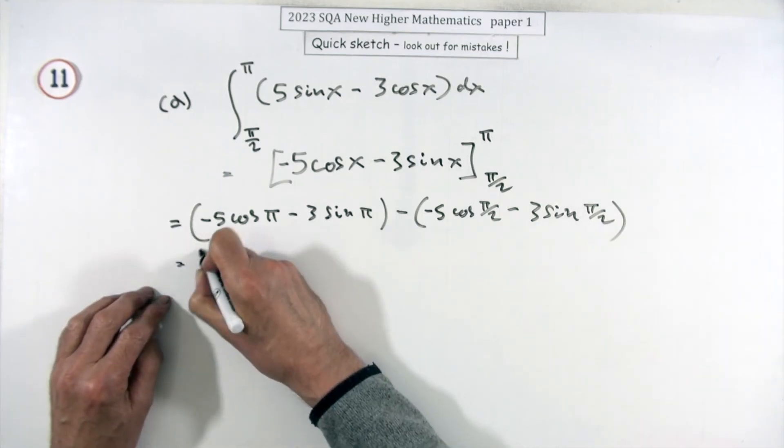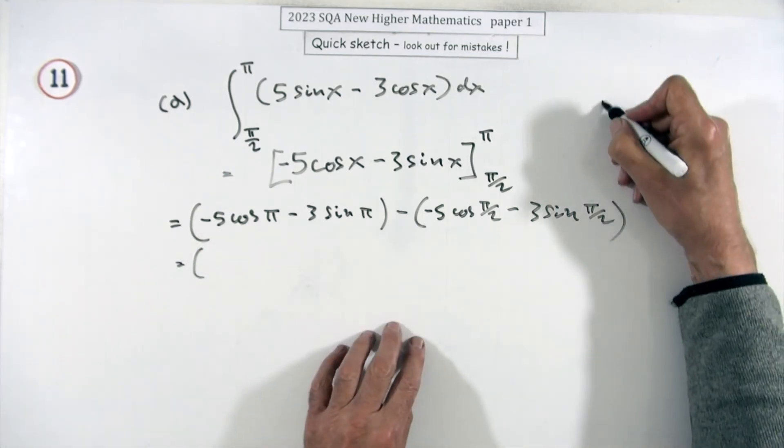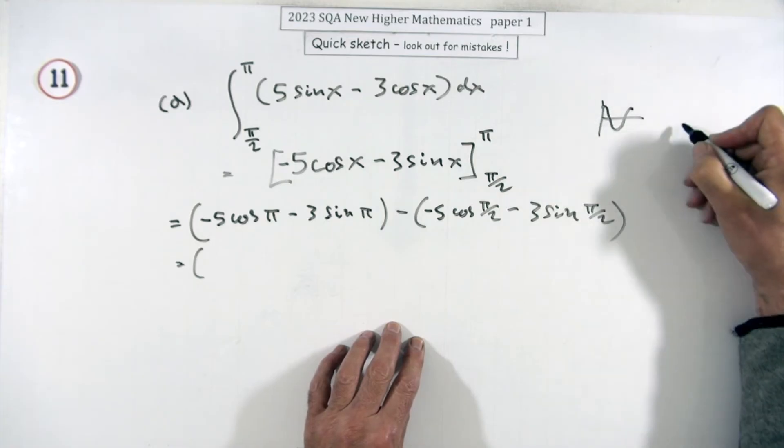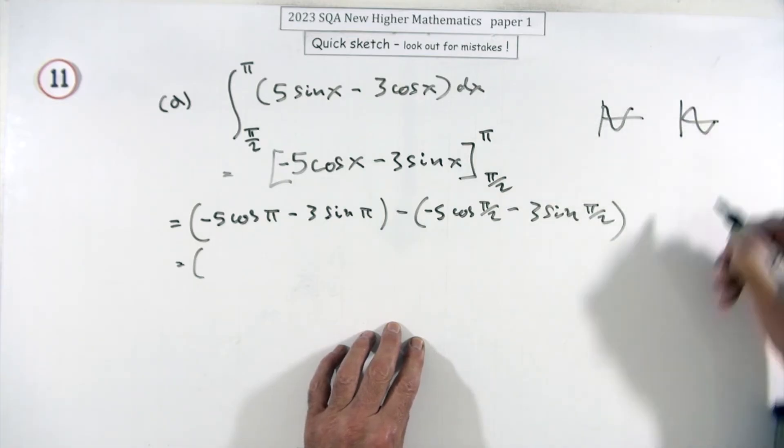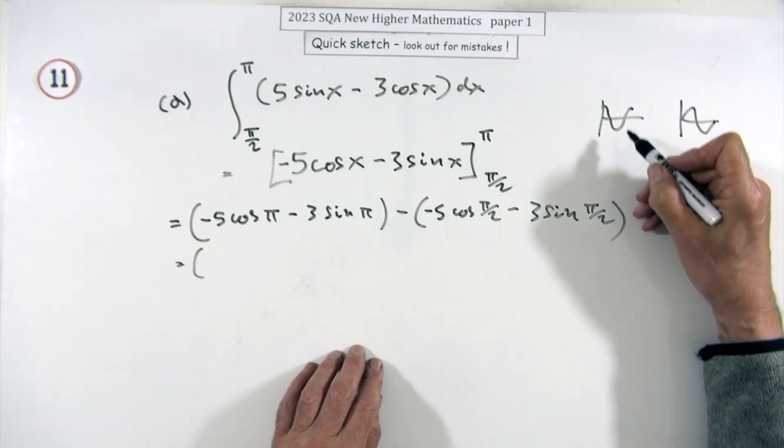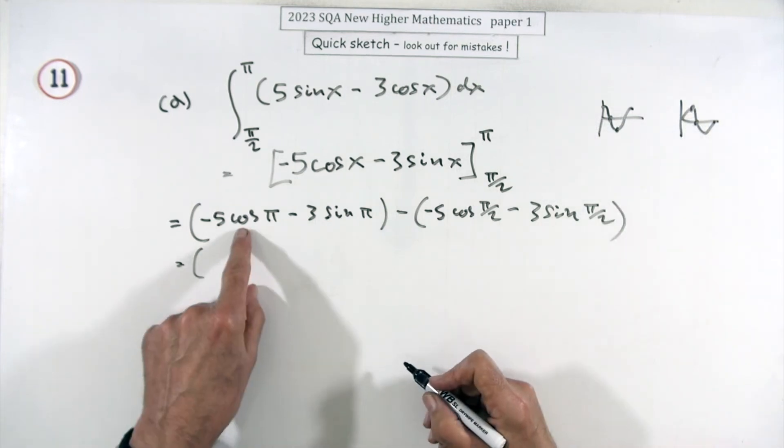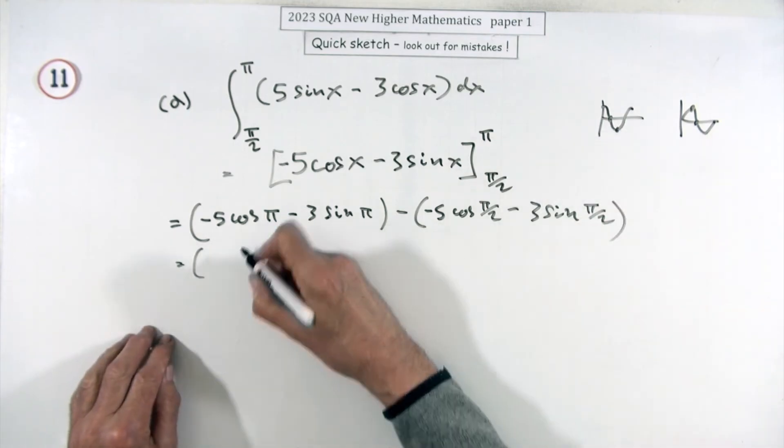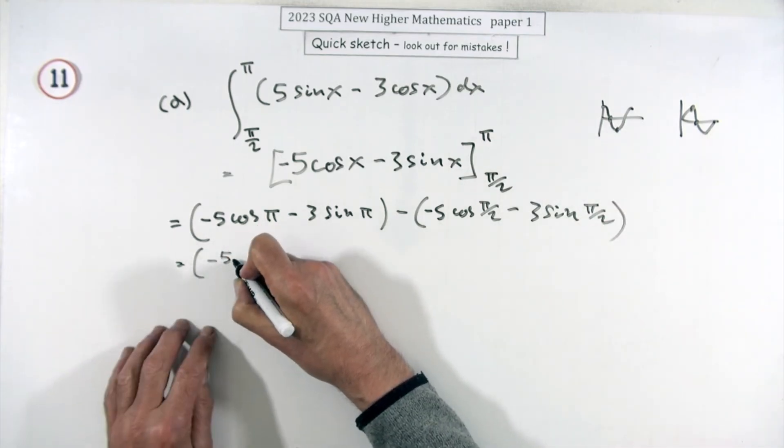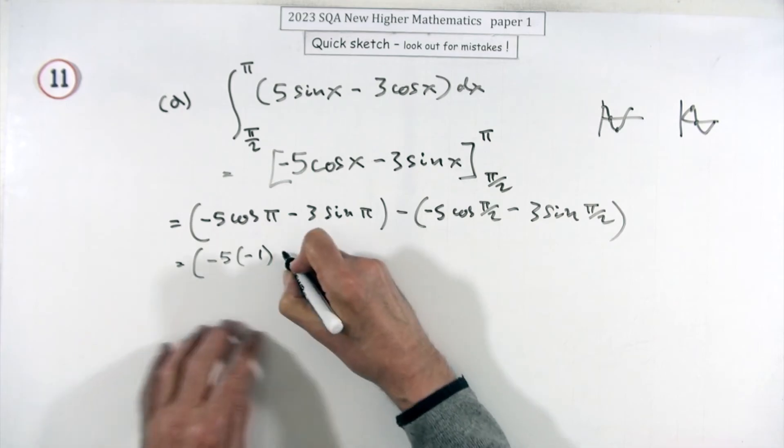Think of the little graphs because they'll either be ones, zeros, or negative ones. Put a note here: there's the cosine graph, there's the sine graph. The ones you're interested in are π/2 and π.